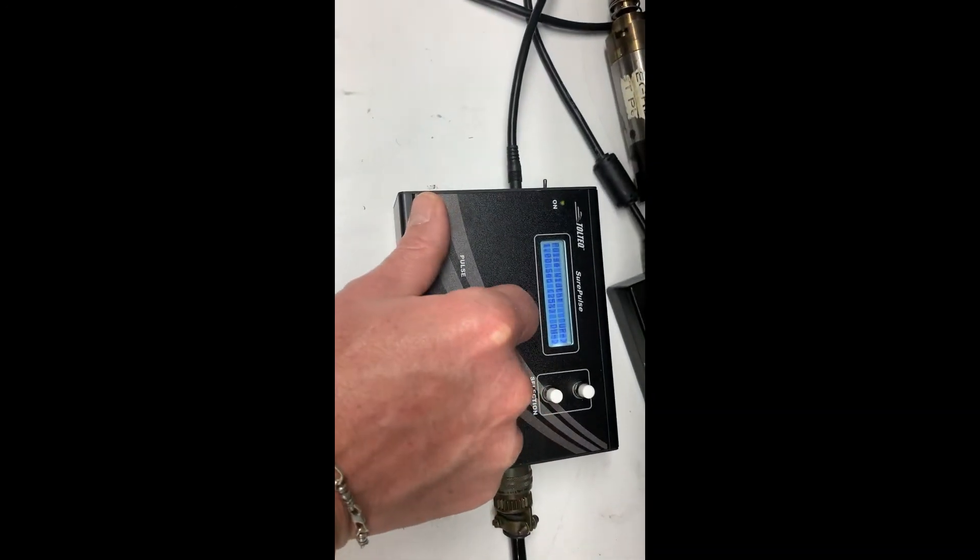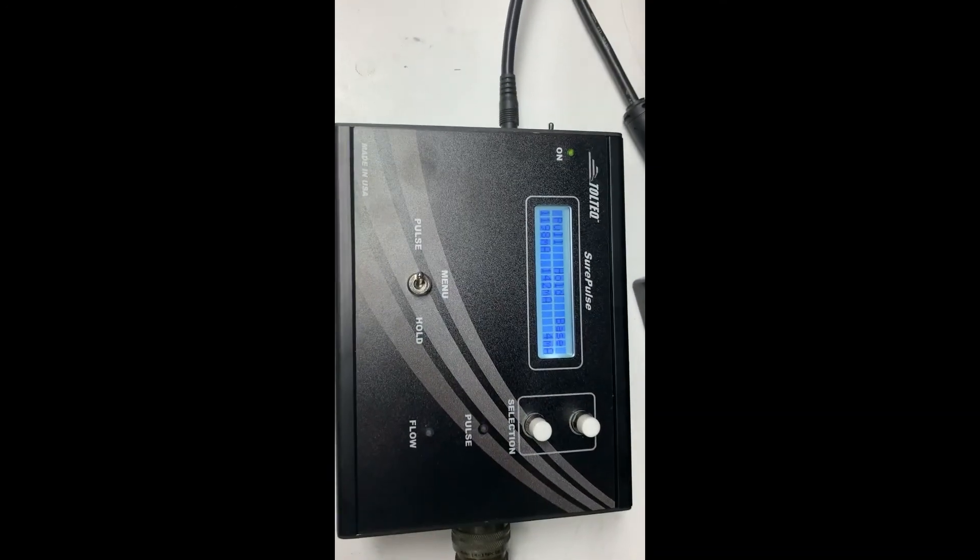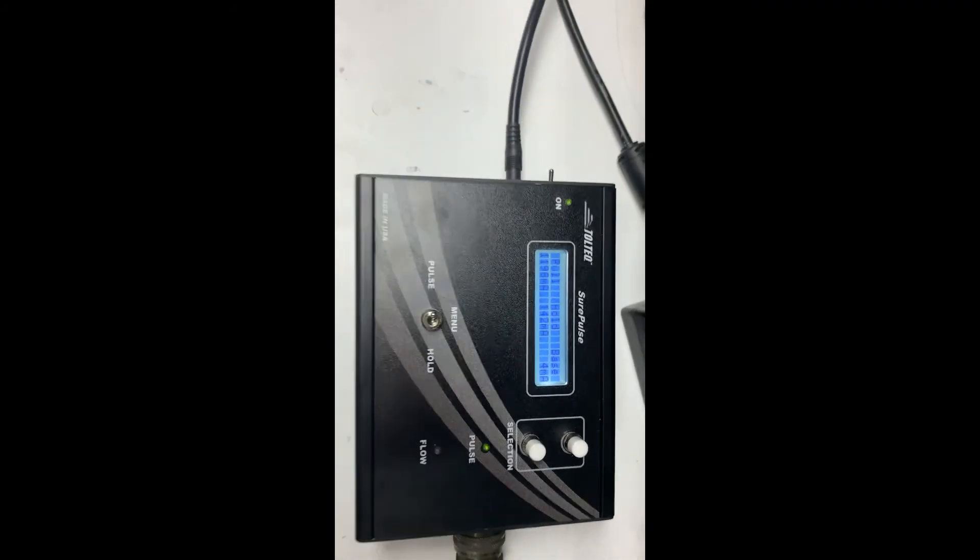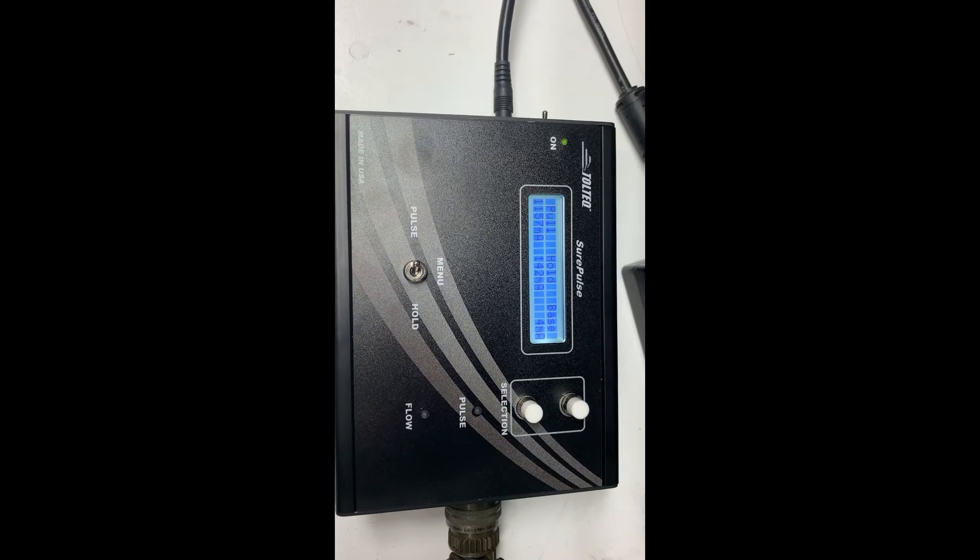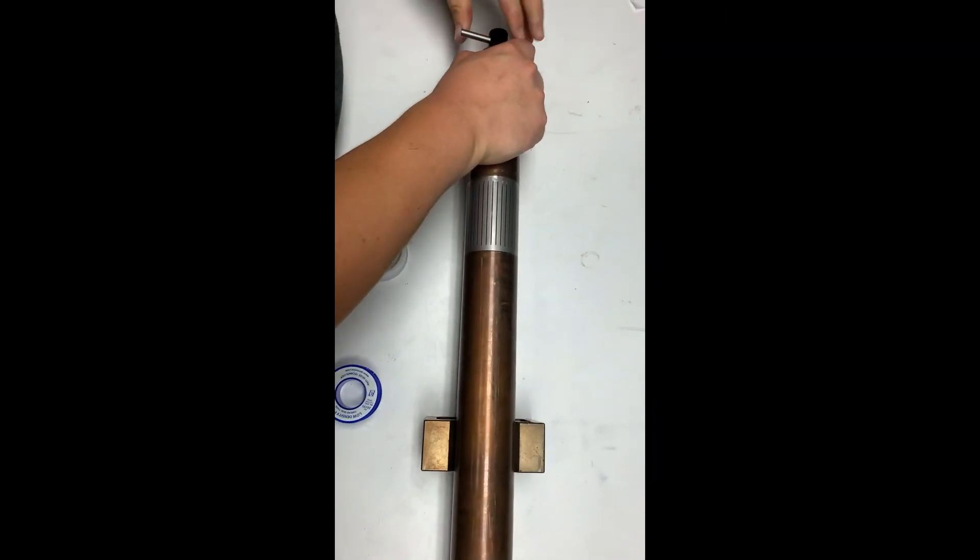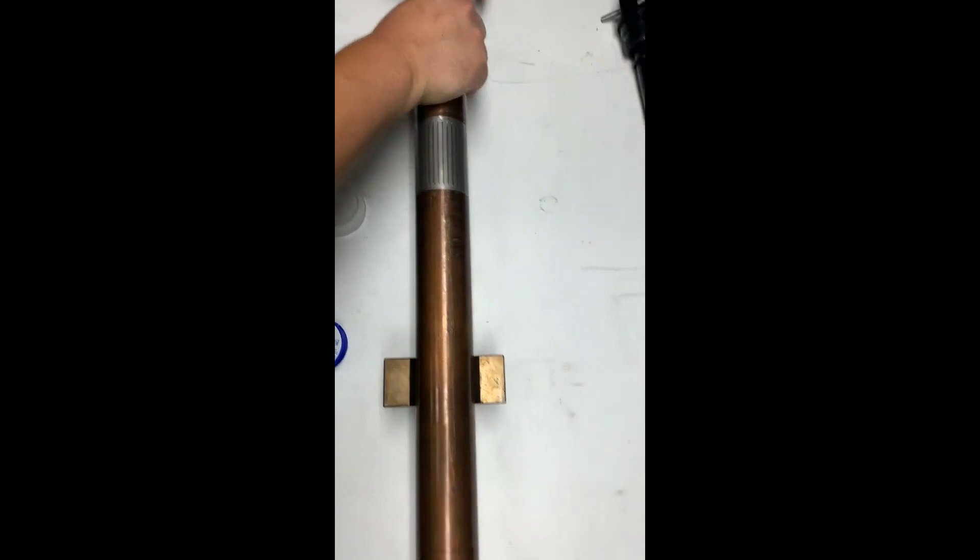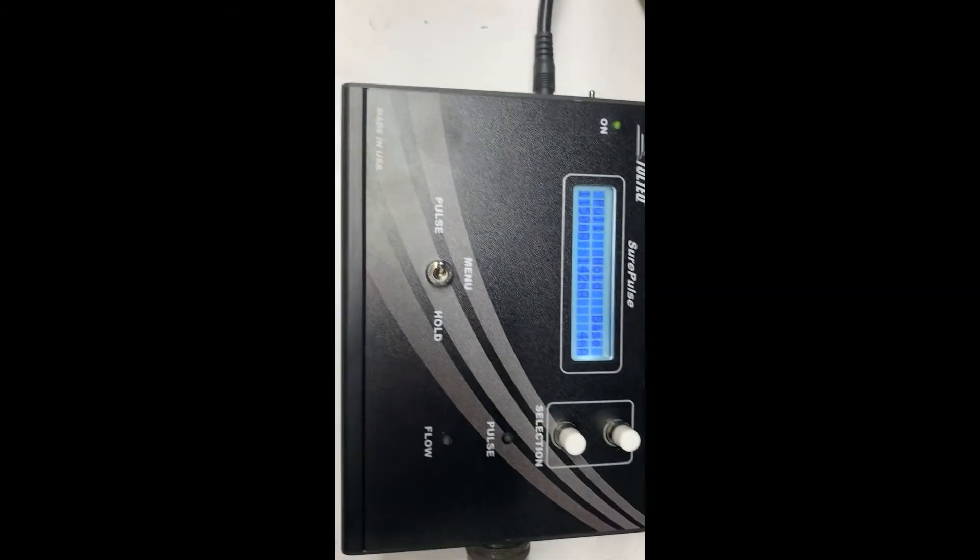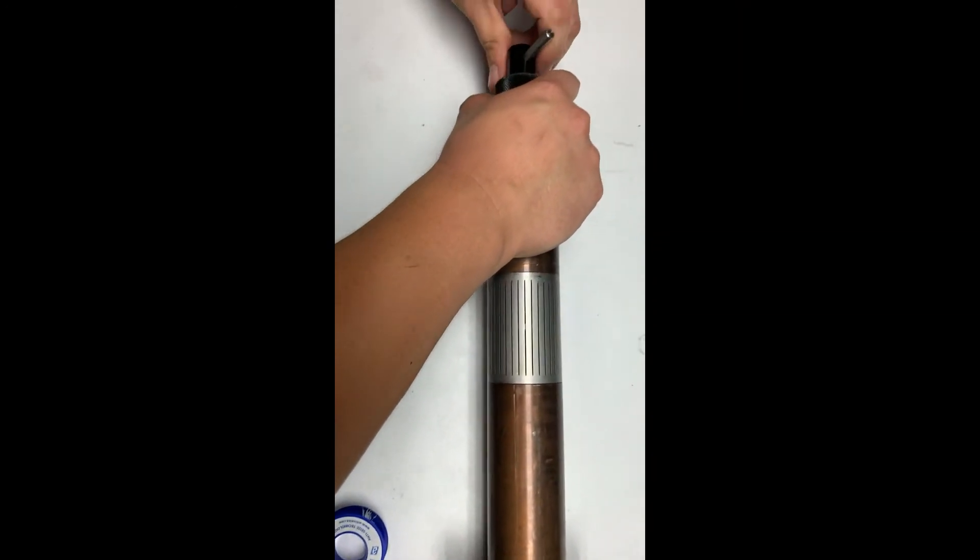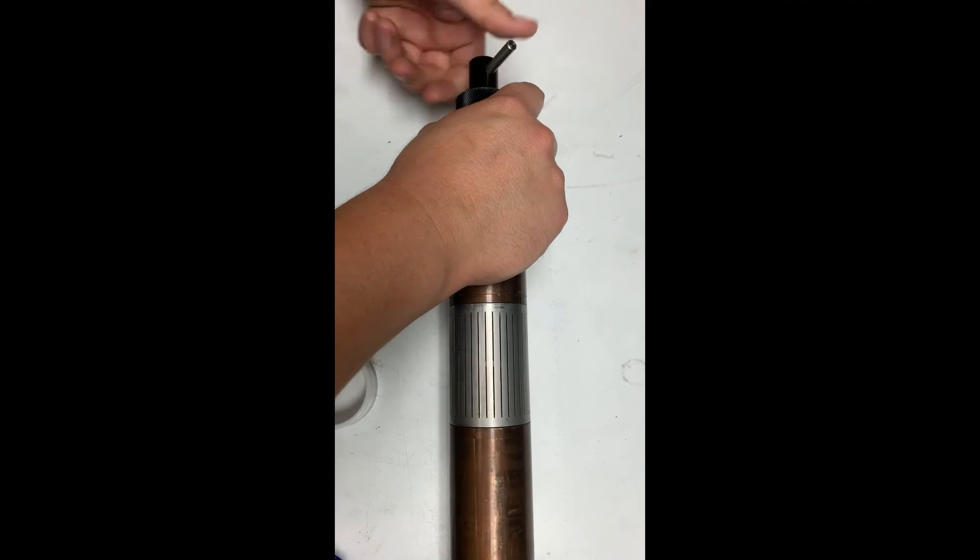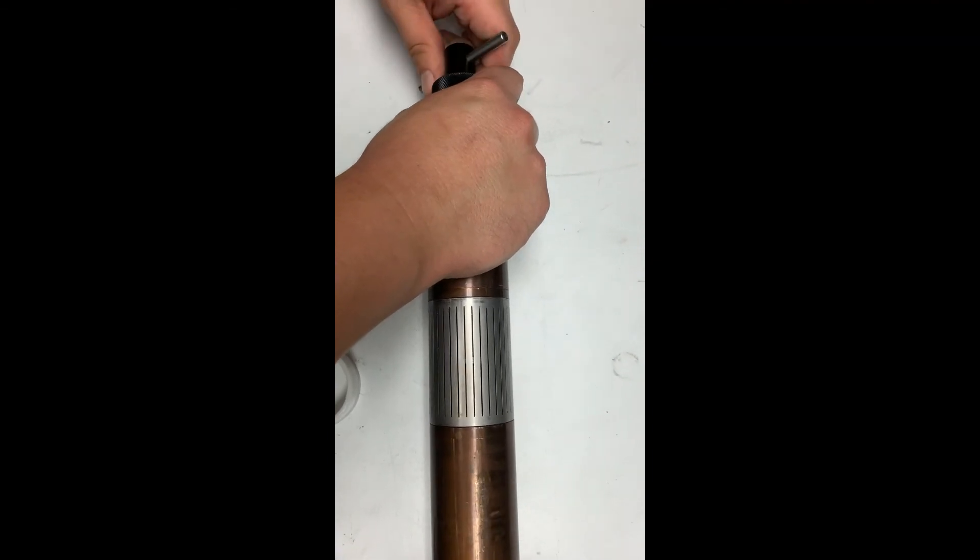So we can also use the SurePulse to help us set the gap. Before we removed the orifice holder we were seeing 950 milliamp on the pull. The manual will tell you to screw the orifice holder in all the way, screw it in all the way until it bottoms out and then back it out two turns.